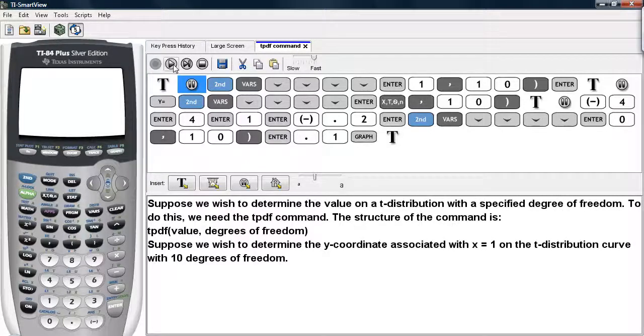Suppose we wish to determine the value on a t-distribution with a specified degree of freedom. To do this, we need the tPDF command, and the structure of the command is as follows.